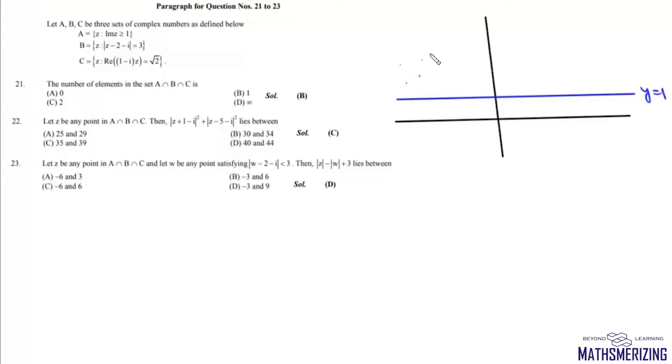all the points which lie on this line or above this line. Now second one is, b represents this circle which is mod of z minus 2 plus iota equals 3.